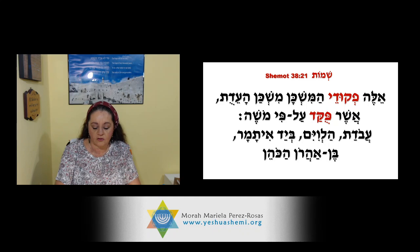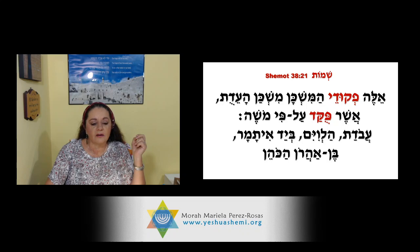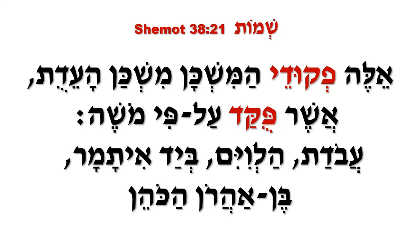Acá está recordando todo lo que se ha hecho. En el hebreo dice: L-PQDI o FQDI — la palabra es PQDI pero aparece como F. La letra L significa 'estos' o 'estas', es una de las pocas palabras en hebreo que puede usarse para femenino y masculino. FQDI, acá en la traducción textual lo han traducido como 'inventario.'